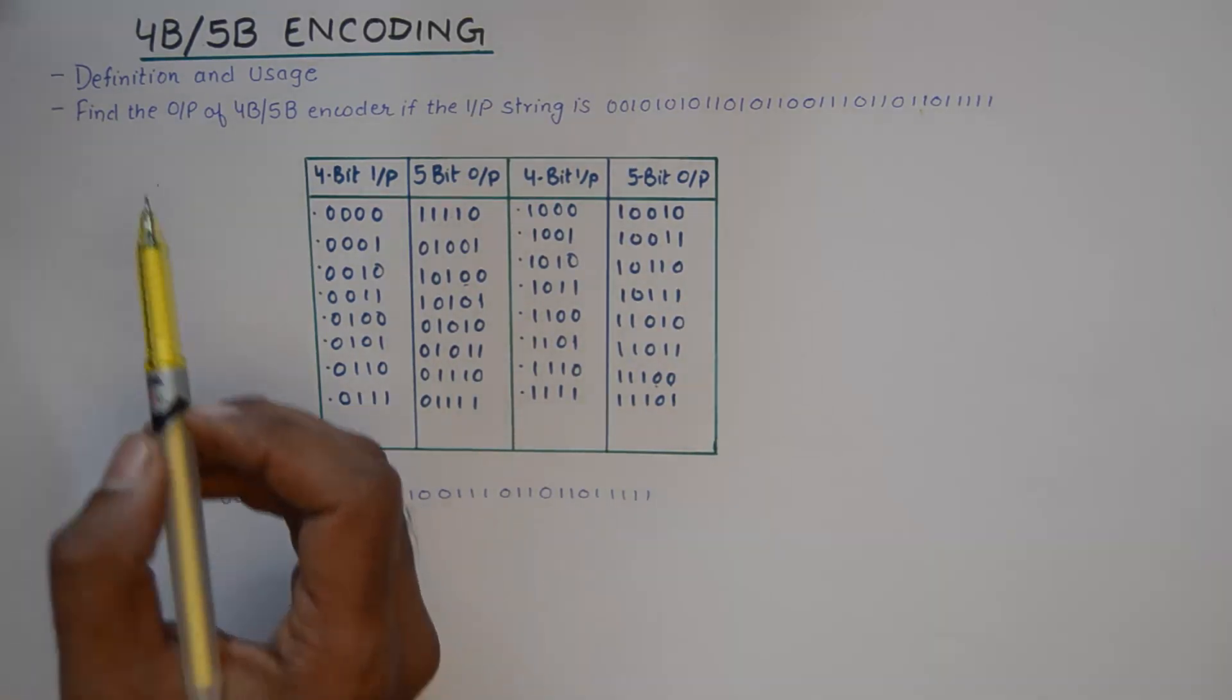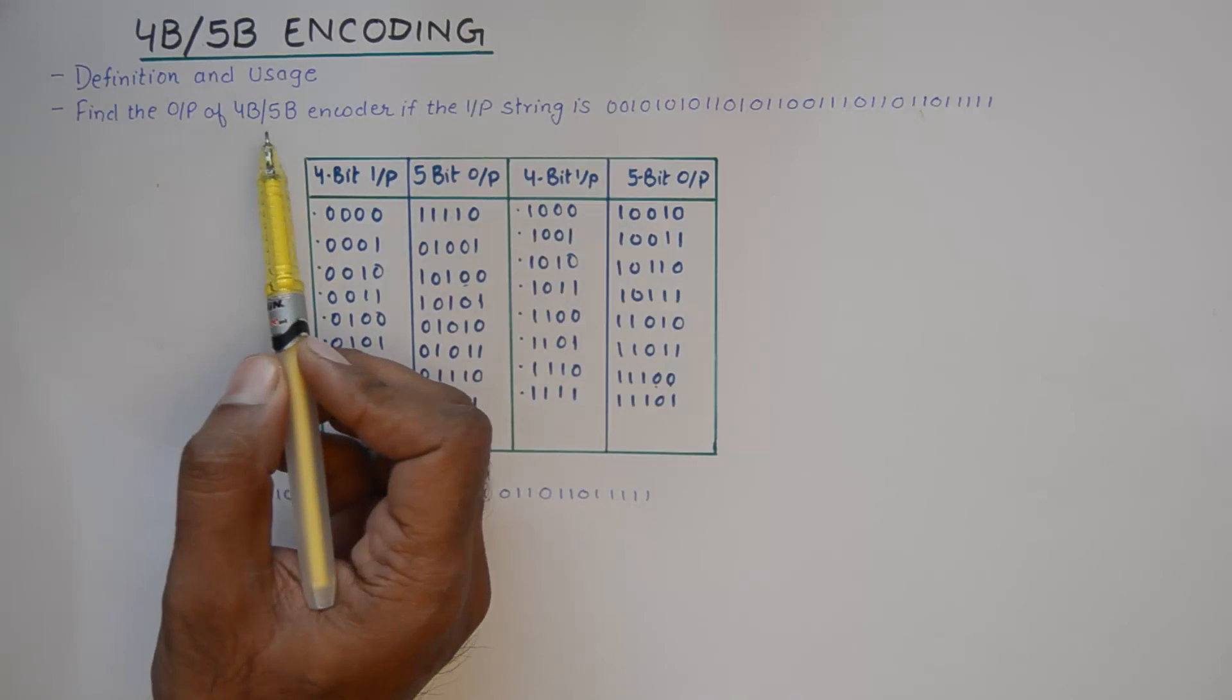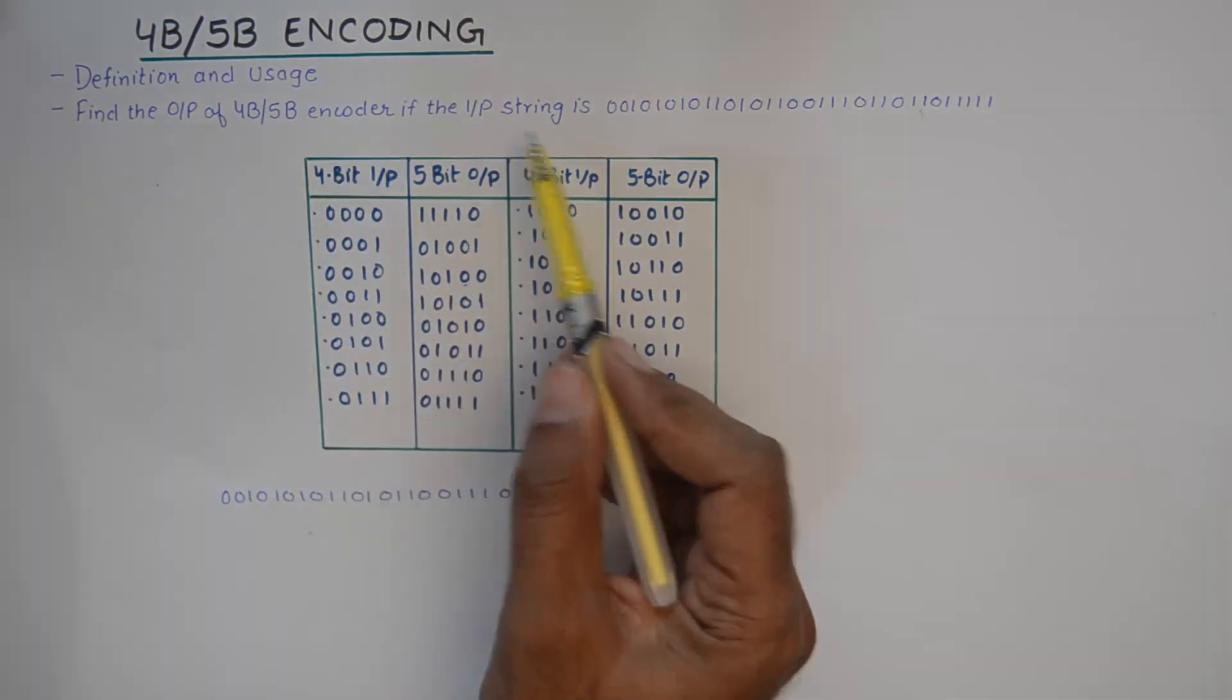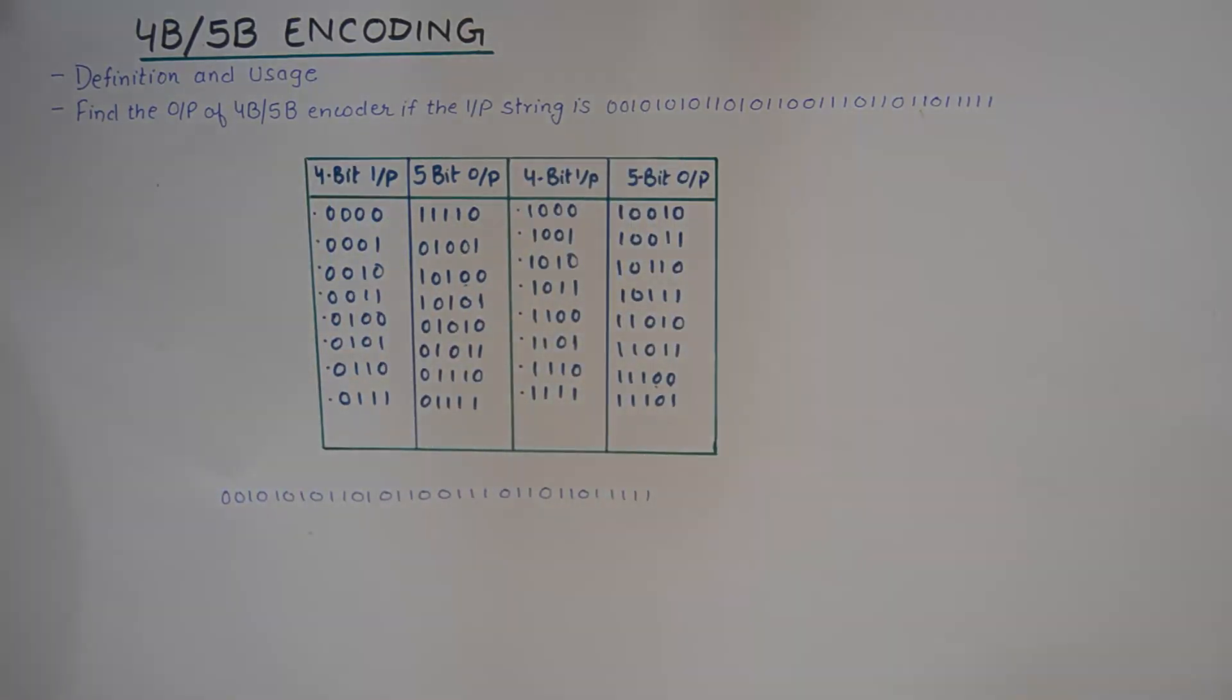So if you are given a question like this: find the output of 4B5B encoder. If the input string is this, then how do we go about solving this question?